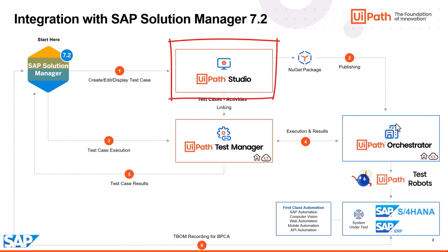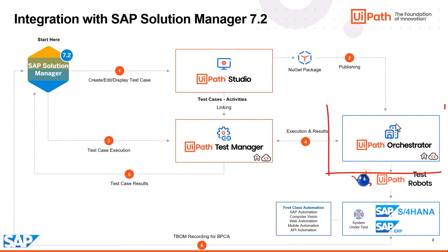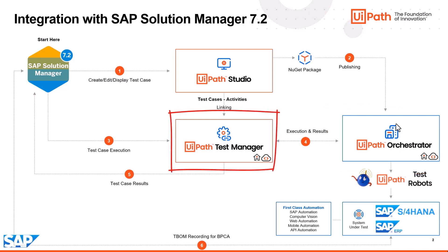In the UiPath Studio, you would use the built-in recorder to record the SAP transaction described in the test case. And once the automation is built, you will publish the package to the UiPath Orchestrator where the test automation will be housed securely. Simultaneously, it would automatically link the automation with the test manager for traceability and visibility.